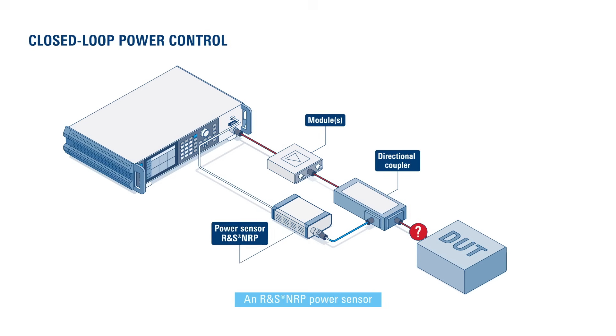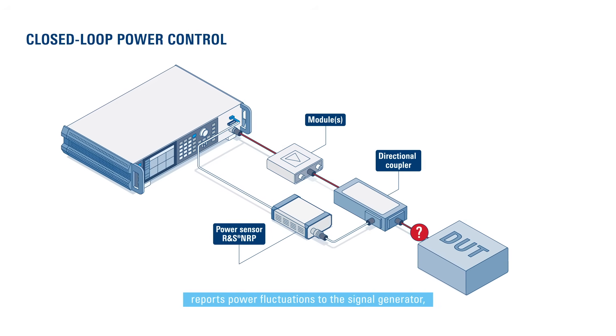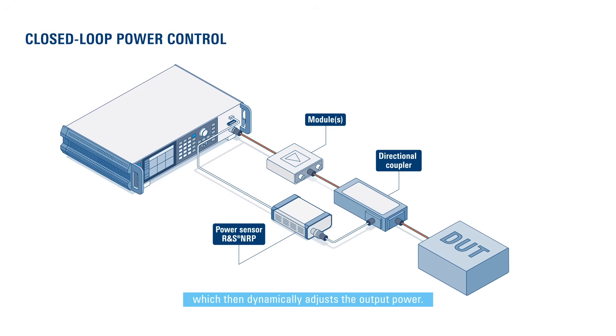A Rohde & Schwartz NRP power sensor reports power fluctuations to the signal generator, which then dynamically adjusts the output power.